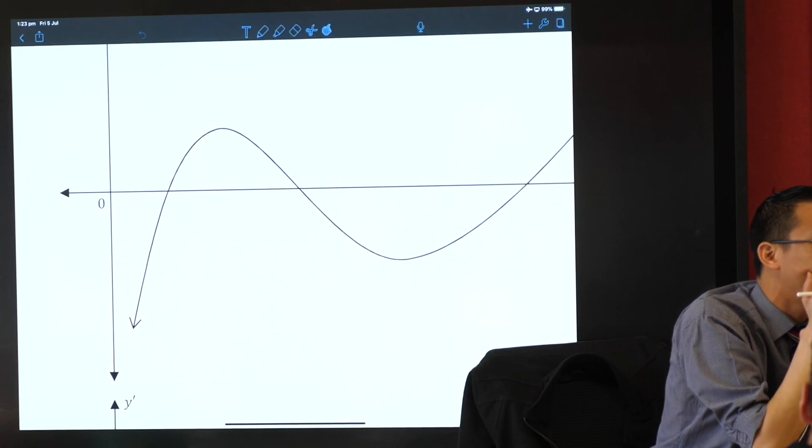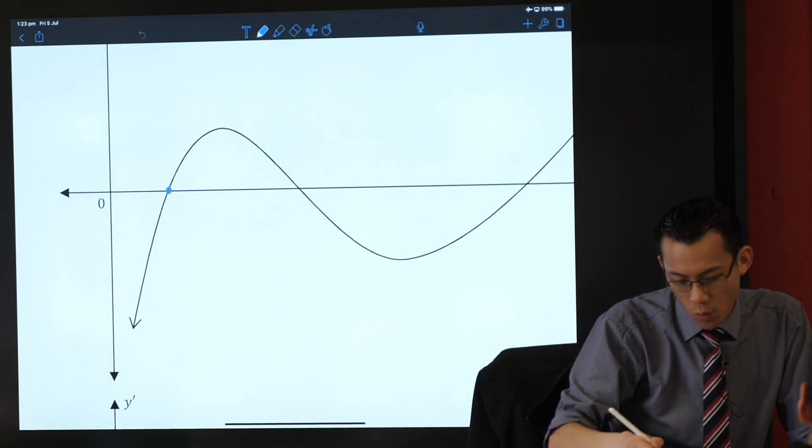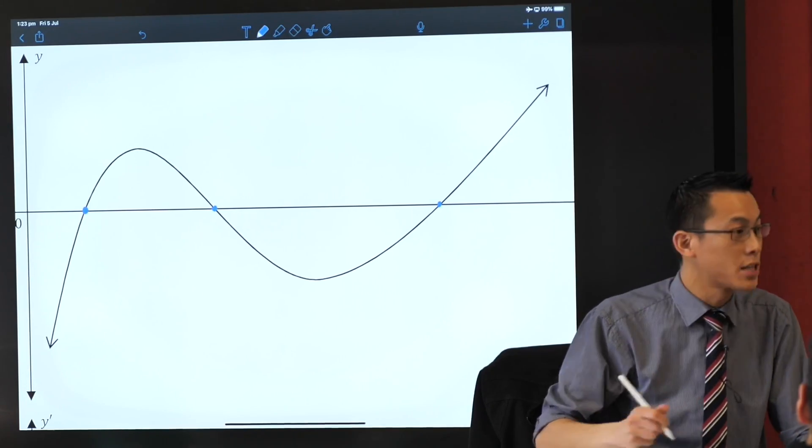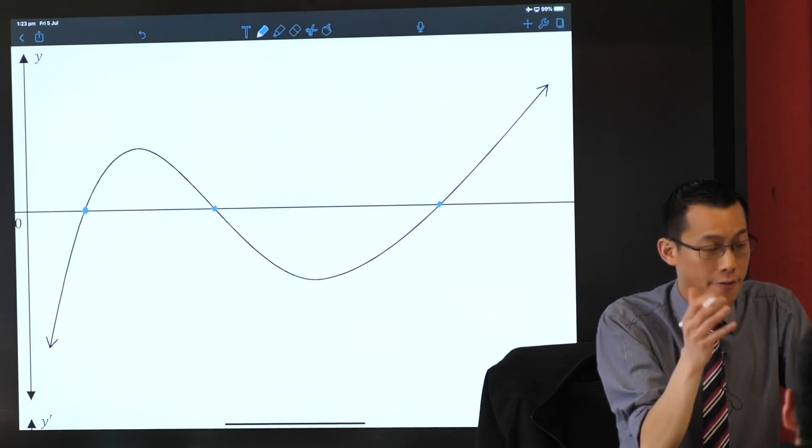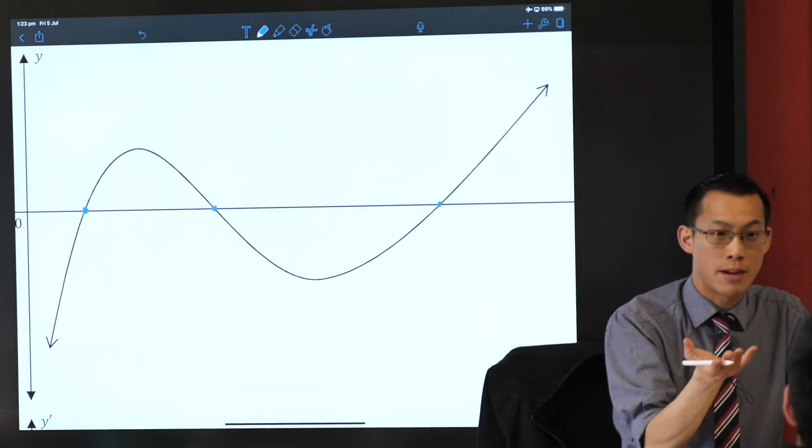Where the line intercepts the x-axis. Okay, so fantastic. Let's all mark in, I count one, two, and three spots where our graph, our function, intersects with the x-axis. So we call these guys the x intercepts.